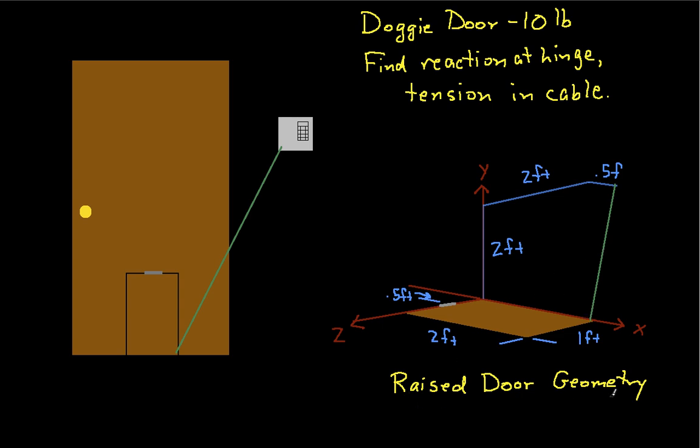So that's the goal, is to find the reaction at the hinge and also the tension in the cable. This picture shows us what the raised door looks like. I've put a coordinate system on here and the coordinate system has its origin right here and then has the x-axis, the y-axis and the z-axis. This also shows the geometry. The hinge is half a foot along the z-axis. The door itself is two feet by one foot and the location of the winch that's pulling up the cable is out over here.